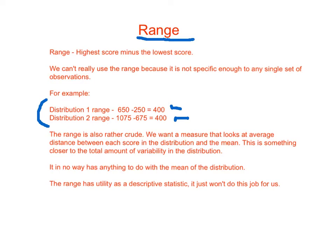The range is also rather crude. We want a measure that looks at the average distance between each score in the distribution and the mean, but the range is something closer to the total amount of variability in the distribution. It also in no way has anything to do with the mean of the distribution. It takes the highest score and the lowest score, and the mean's not really involved at all in the calculation of the range.